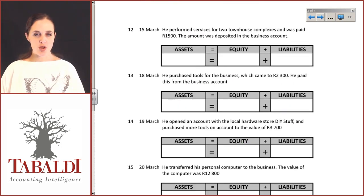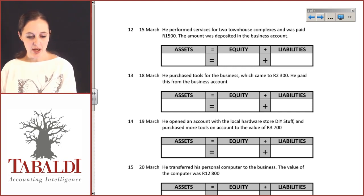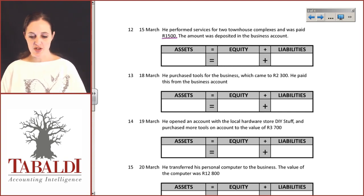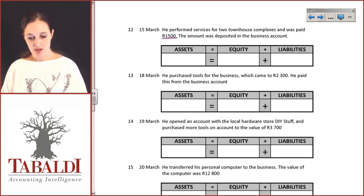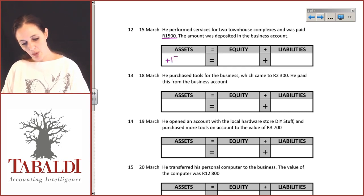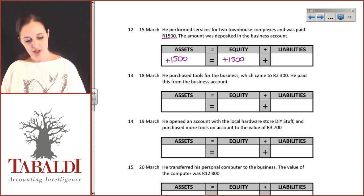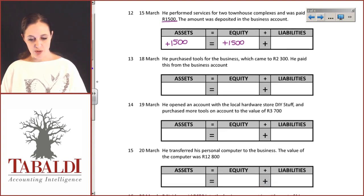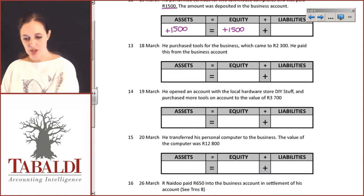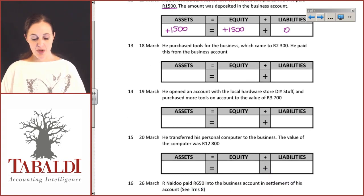He performed services for two townhouse complexes and was paid one and a half thousand Rand, with the amount deposited into the business account. So the bank account is up by 1,500 Rand and our equity is up by 1,500 Rand because this is profit which closes off to equity. Liabilities are not affected.